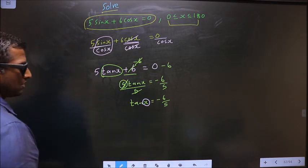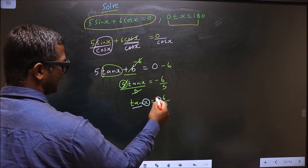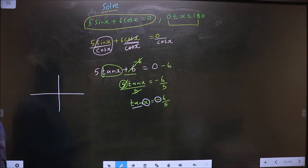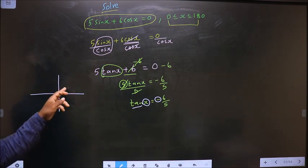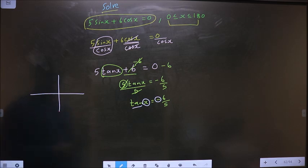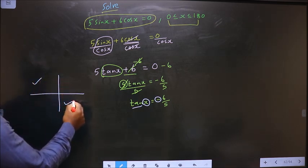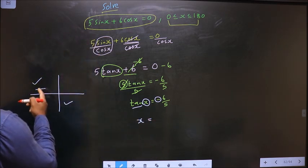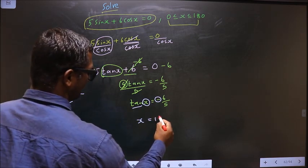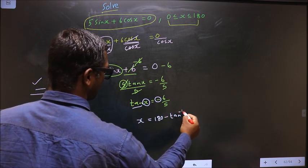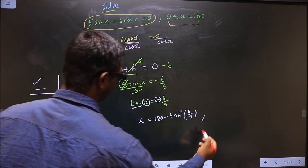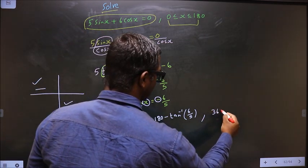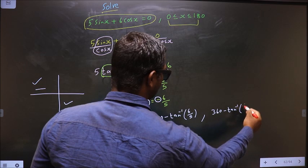Now to get the values of x, here it is tan and here it is negative. So now check in what all quadrants is tan negative. It is all silver tea cups. So tan is negative in the second and in the fourth. So now x equal to: to get an angle in the second quadrant we should do 180 minus tan inverse 6 by 5. To get an angle in the fourth quadrant we should do 360 minus tan inverse 6 by 5.